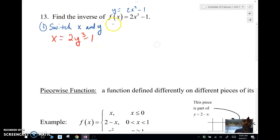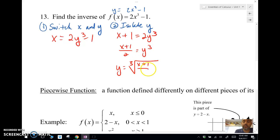And then my second step is I'm going to isolate the y value, isolate y, the y variable. So I'm going to add 1 to both sides, divide by 2, and take the cube root of both sides. And then I'm going to use my inverse function notation. And there we go.